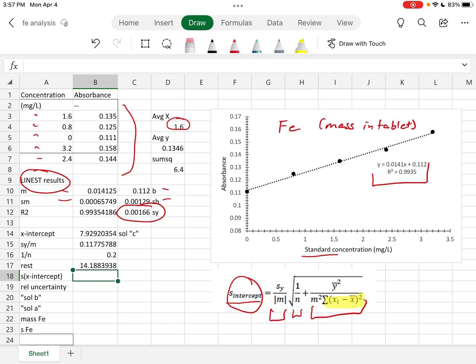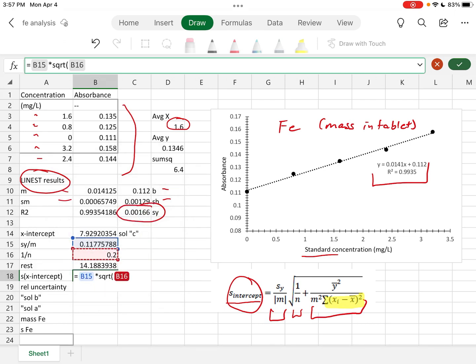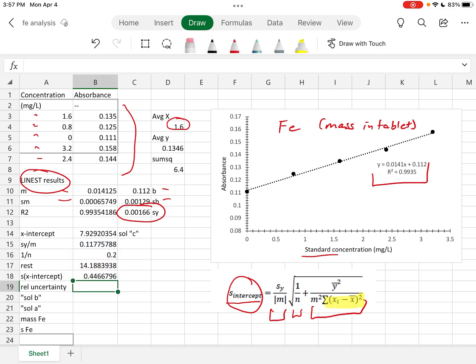There we are. And now we have all the three pieces to put together the error and the intercept. This is going to equal that value times the square root of that value plus that value.